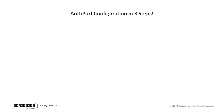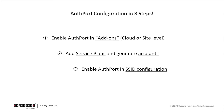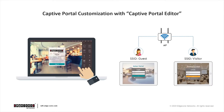AuthPort can be set up in three steps. The first step is to enable AuthPort from the Add-ons page, and you can either enable AuthPort at the cloud level or at the site level. The second step is to add service plans and create accounts. Then the third step is to enable AuthPort in your SSID configuration. And since with AuthPort, wireless clients are authenticated through captive portal, a captive portal editor is available. A captive portal is included in AuthPort so that you can customize your own captive portal, and multiple captive portals can be saved for use.